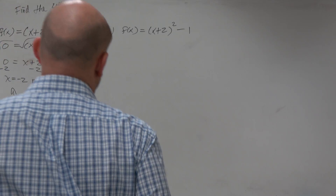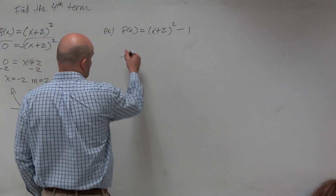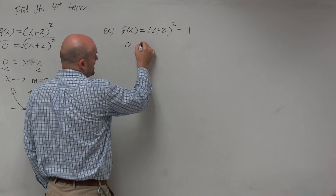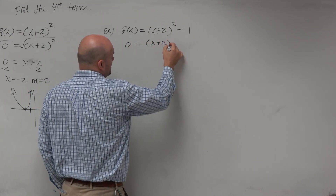The reason why I bring this up is, again, if we're going to find the zeros, we're going to replace f of x with 0. Now, there are really two ways that we could do this problem.